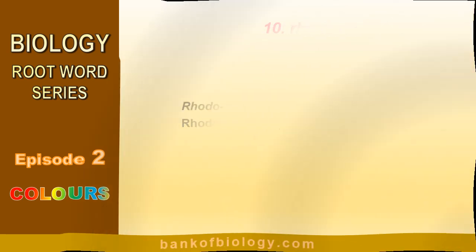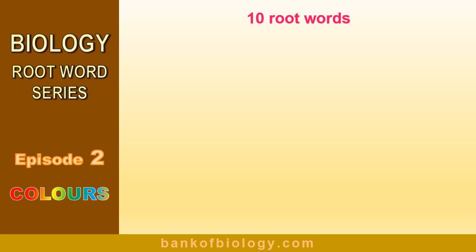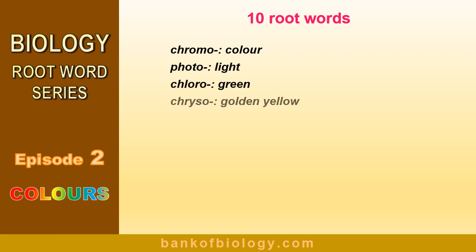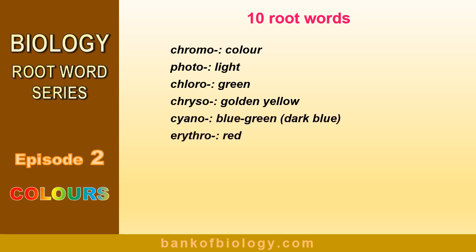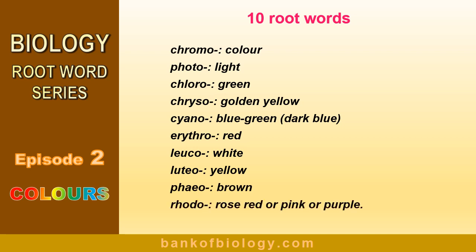Today we learned 10 very important root words related to colors. Chromo means color. Photo means light. Chloro means green. Chryso means golden yellow. Cyano means blue, green, or dark blue. Erythro means red. Leuco means white. Luteo means yellow. Pheo means brown. Rhodo means rose, red, pink, or purple.